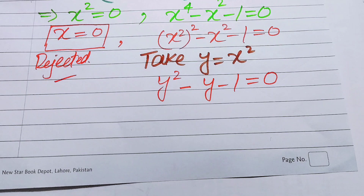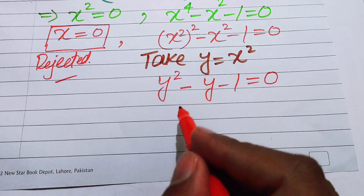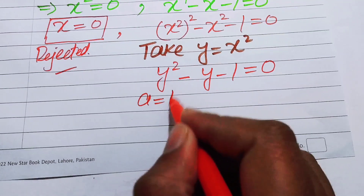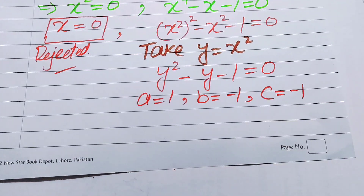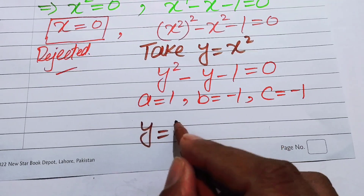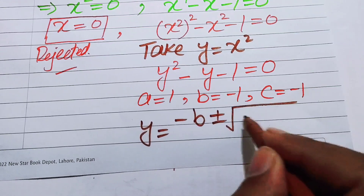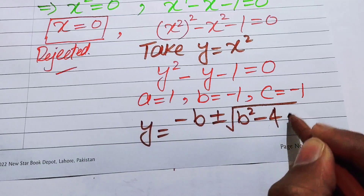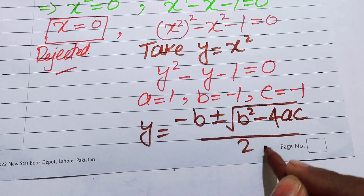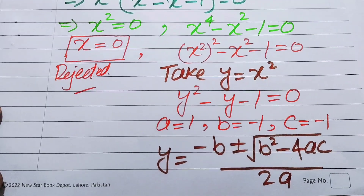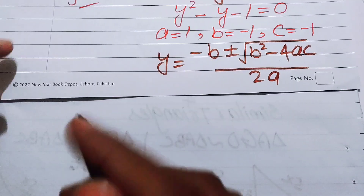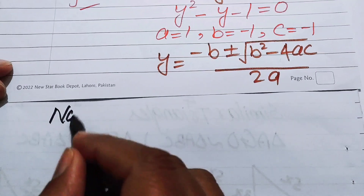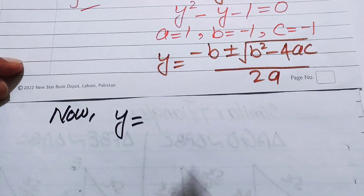We use the quadratic formula to find the values. The coefficients are: a = 1, b = −1, and c = −1. The quadratic formula is y = (−b ± √(b² − 4ac)) / (2a). We now substitute all the values of a, b, and c into this formula.